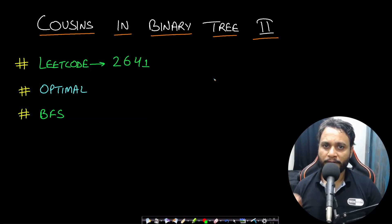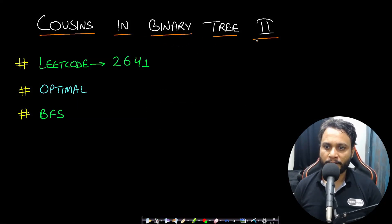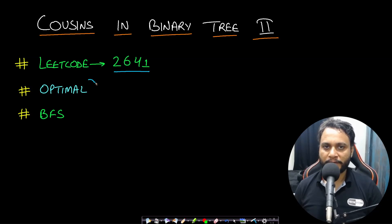Hello guys, welcome back to TakeDose. In this video we will look at the Cousins in a Binary Tree 2 problem, which is LeetCode number 2641, and we will be solving this problem using the most optimal one-pass BFS approach.